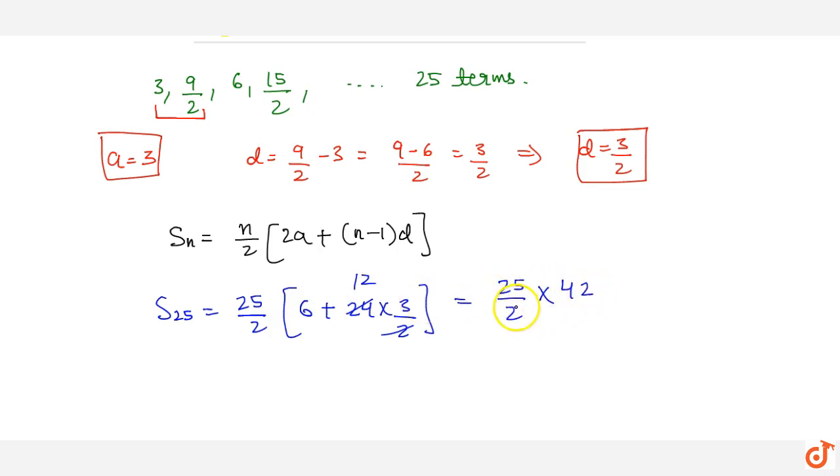So we have 25 by 2 into 42. This gives us 21 times 25, which equals 525. So the answer to this question is 525.